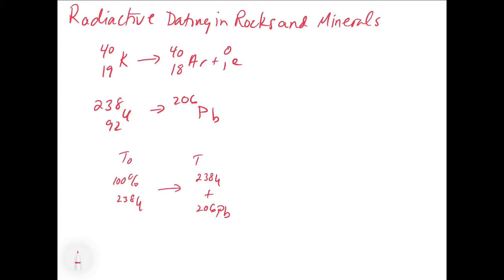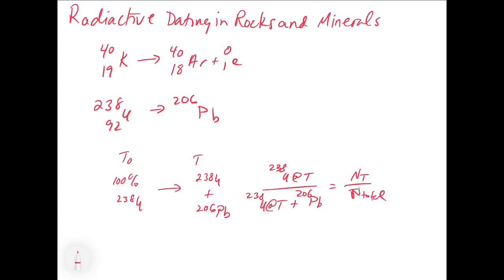What you can do is say the amount of uranium-238 left at time t, divided by the U-238 at time t plus the lead-206 that's there, is going to equal the number of atoms at time t divided by the total number of atoms that there was originally. That's because when the uranium decomposes it turns into lead, so you get a uranium-lead mixture, and we can work back using conservation of mass to say the combination of those two elements gives us the original number of atoms in the sample.